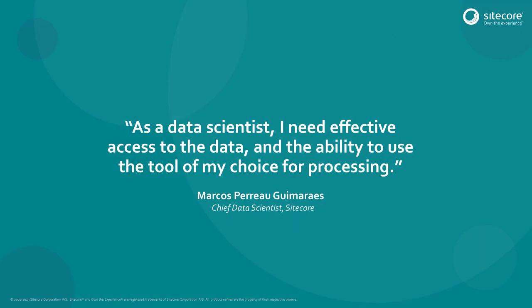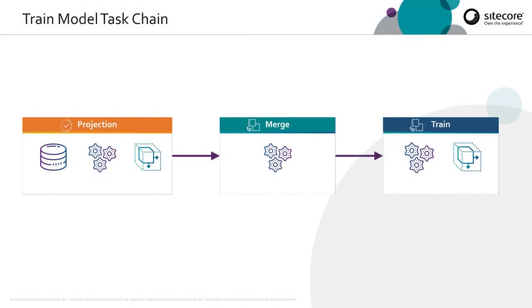I'd like to provide a quote now from our chief data scientist, Marcos Perrier-Gimaraes: "As a data scientist, I need effective access to the data and the ability to use the tool of my choice for processing." If we have a look at a typical task chain, this task chain is used to train an ML model. It consists of three separate tasks: projection, merge, and train.